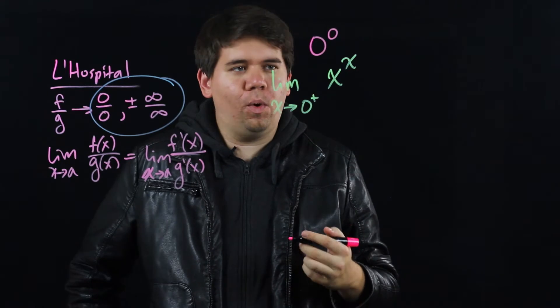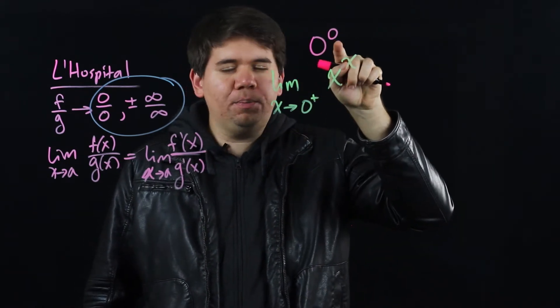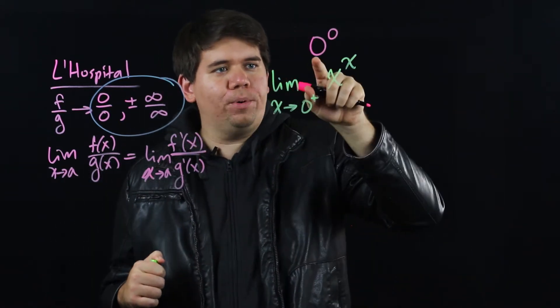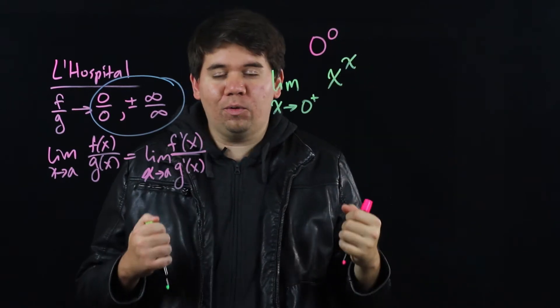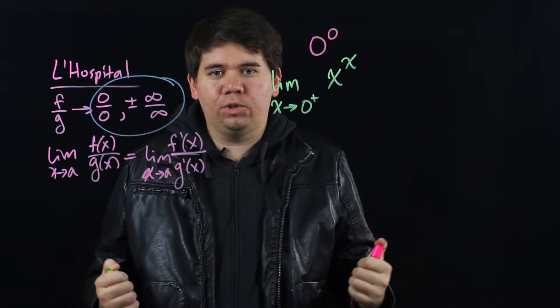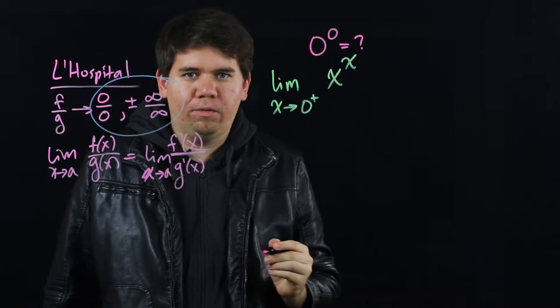Like 5 to the 0th power is 1. So the base is saying go to 0. But the exponent is saying go to 1. And so there's a tug of war. The one part's calling it to go to 0. The other part's telling it to go to 1. It's not clear where it's going to land. Is it going to land at 0? Is it going to land at 1? Is it going to land somewhere in between? We don't know. So this is an example of an indeterminate form.